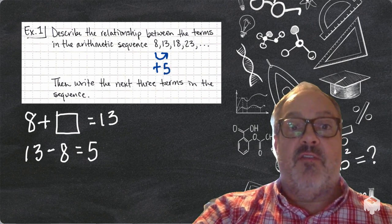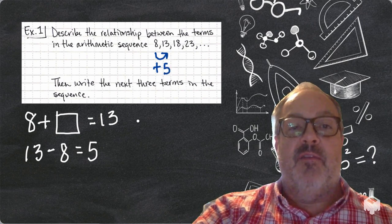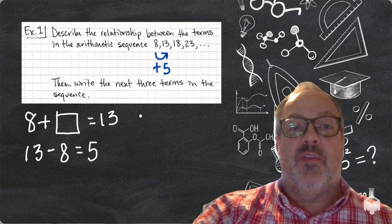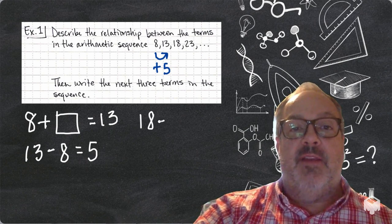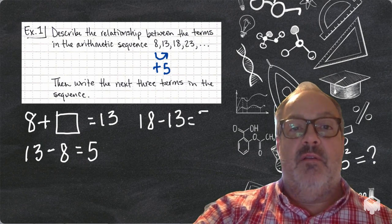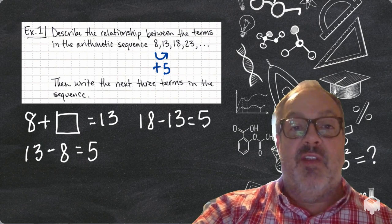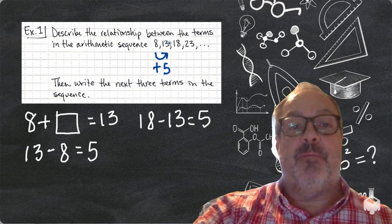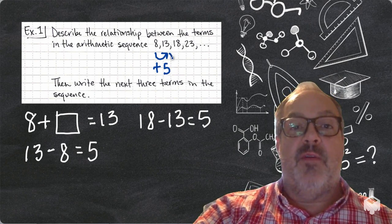Now, let's see if it's true that I'm adding 5 to each of these terms. So, 18 minus 13, because that's the previous number in the sequence, that does equal 5. So, to go from 13 to 18, I am adding 5 to it.